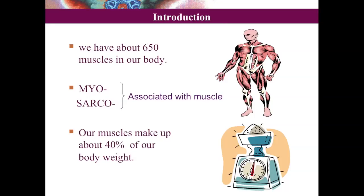We have around 250 muscles in our body. The words 'myo' and 'sarco' are associated with muscle. 40% of our body weight is due to muscle tissue.